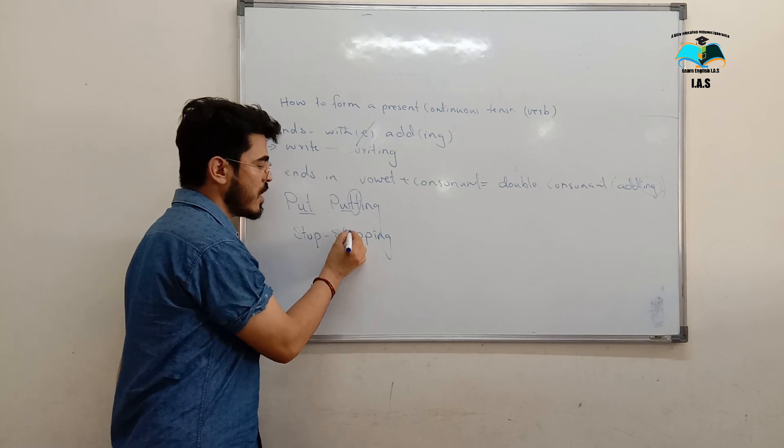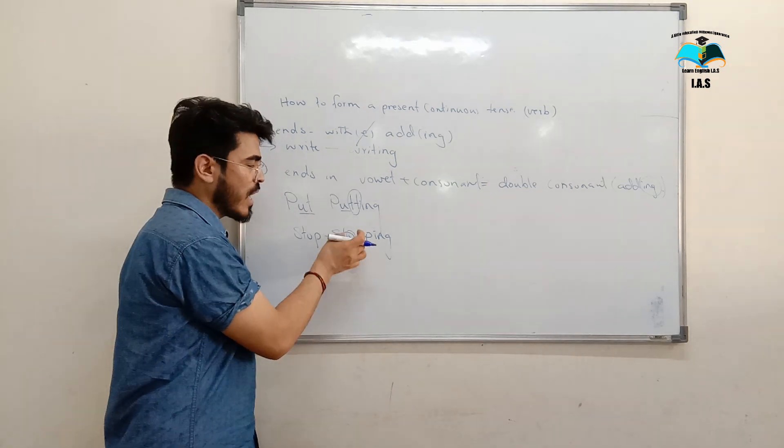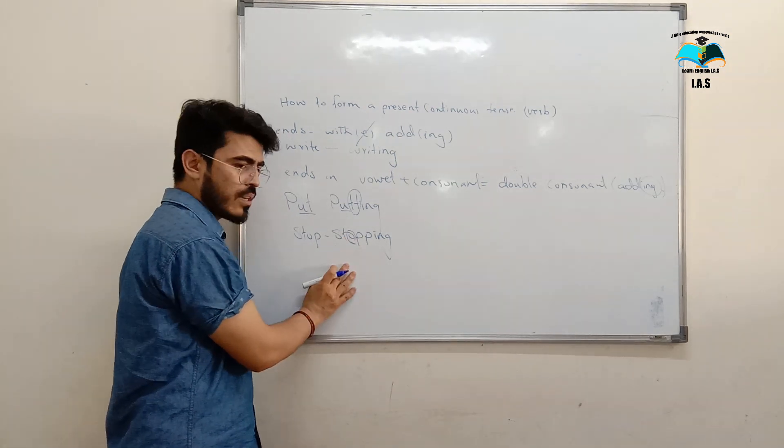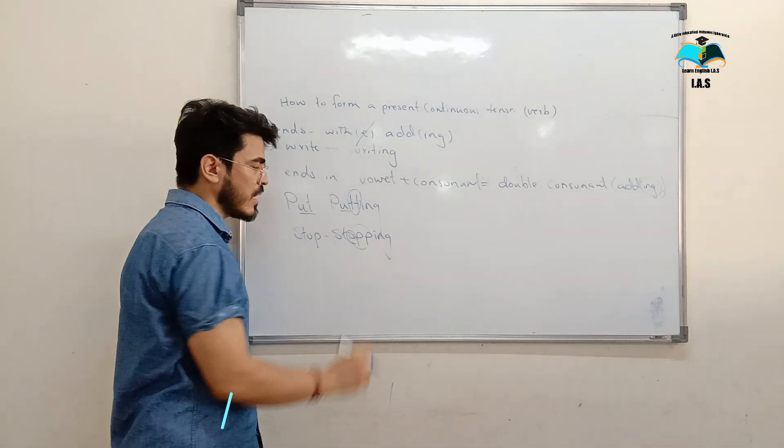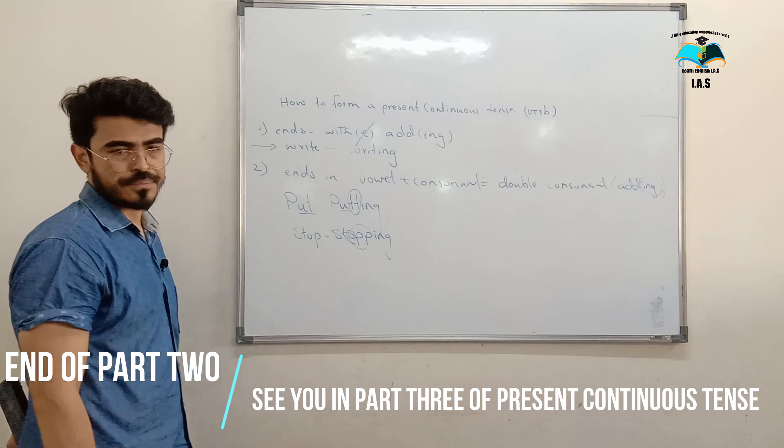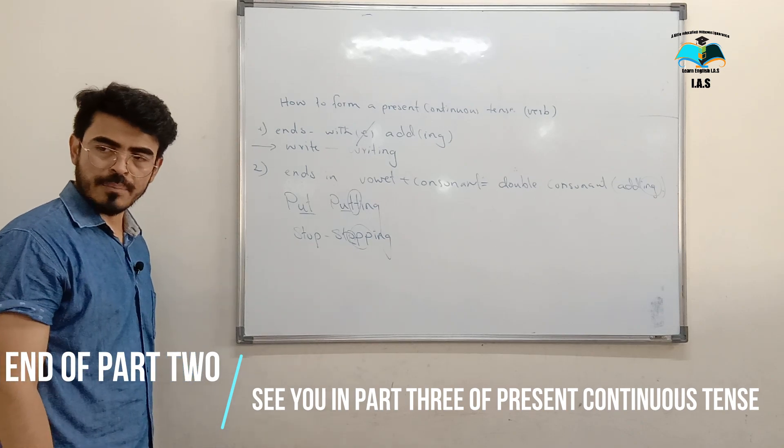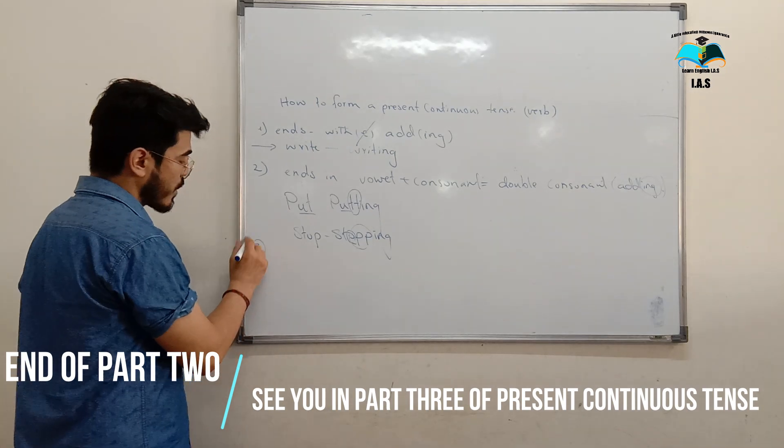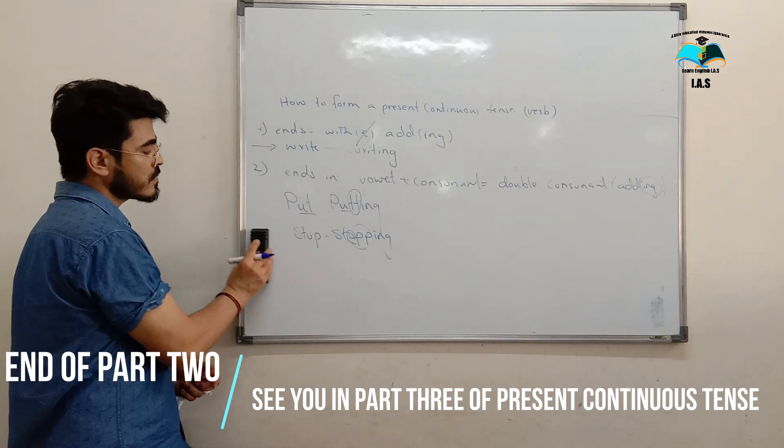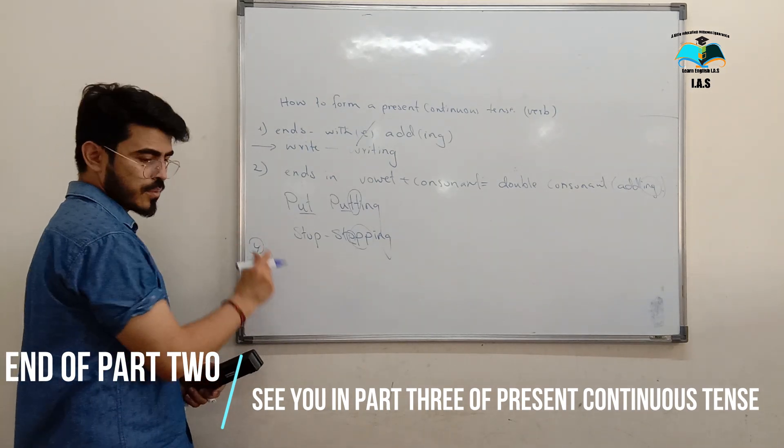Very good. Because here we have what? We have a vowel and then we have a consonant. In order to form this one, we are doubling the consonant, then adding ING. Understood? Any problem now? Very good. If you want to take this, you can take this, please.